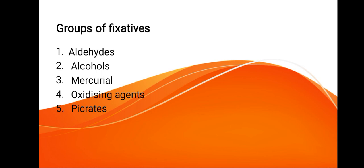The second group is alcohols. Examples are ethanol and methanol. These denature proteins, they cause a lot of brittleness and hardness. They act quickly and give good nuclear details. They are easy to use.